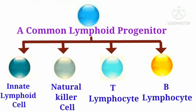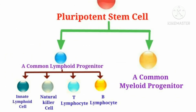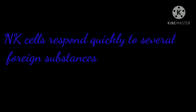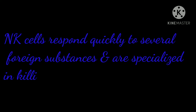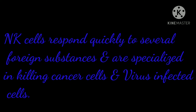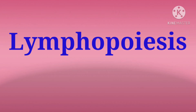A third type of lymphocytes known as the natural killer cells or NK cells also originate from stem cells in the bone marrow. NK cells respond quickly to several foreign substances and are specialized in killing cancer cells and virus-infected cells.